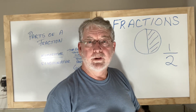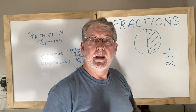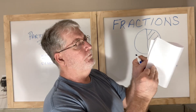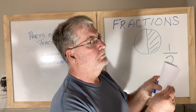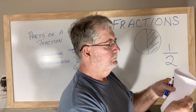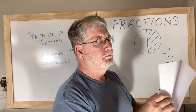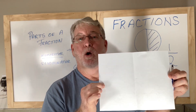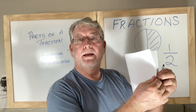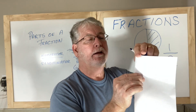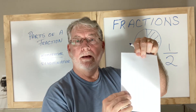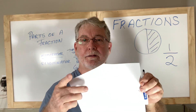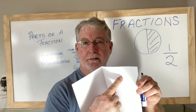One thing I'd like you to do is take a piece of paper and fold it in half. If I have my paper and fold it in half, this is the entire whole piece of paper. When I divide it in half, now I have one half of the whole, and the whole has two pieces — this is one piece, and this would be the second piece.